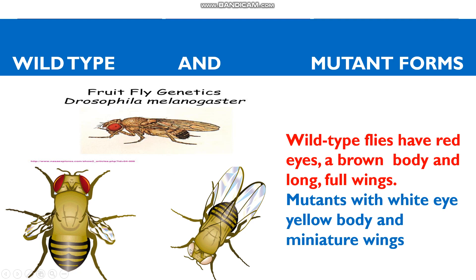The mutant forms have white eye color, whereas normal Drosophila have red eye color. The mutant forms also have miniature wings. These are the distinguishing features of wild type versus mutant forms.